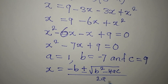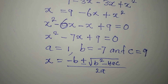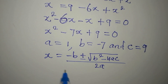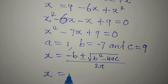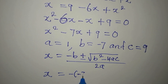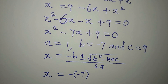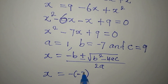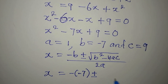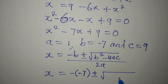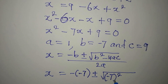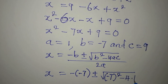Substituting into the formula: in place of negative b we have negative negative 7, then plus or minus the square root of negative 7 squared minus 4 times 1 times 9, all over 2 times 1.